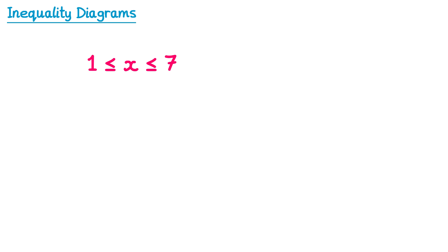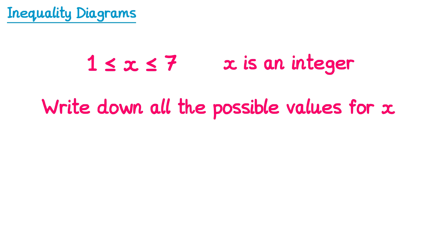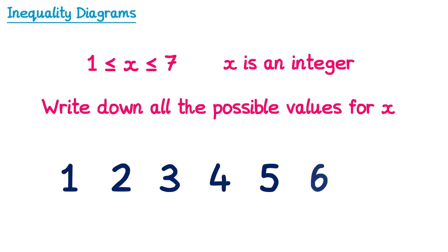Finally, one topic closely related to this is listing solutions to inequalities. You could be given an inequality, told that x is an integer, and need to write down all of the possible values for x. The word integer just means a whole number. So if this inequality says x is in between 1 and 7, and we are allowed to include 1 and 7 because we have less than or equal to symbols, we're looking for all whole numbers from 1 to 7: 1, 2, 3, 4, 5, 6, and 7.